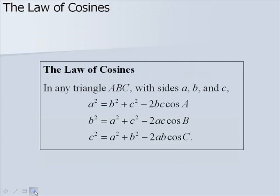Here we have the Law of Cosines. In any triangle ABC with sides A, B, and C, to find one of the sides squared, we take the other two sides squared and sum them, minus 2 times those two sides times the cosine of the angle opposite the side we're trying to find. And you'll notice that's true for each of the three definitions here.